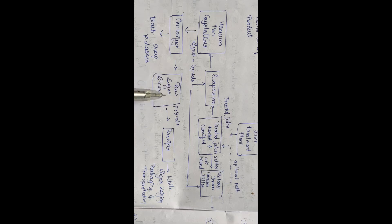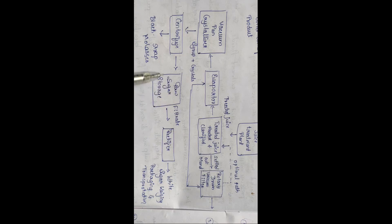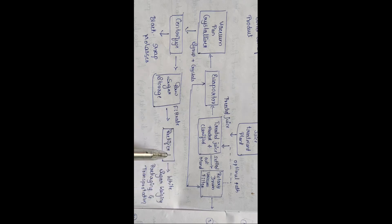The stored raw sugar is filtered using the rectifier. The sugar crystals are initially brownish in color; they are filtered in the rectifier and converted into white sugar crystals. After that, it is packed and other processes are carried out. This is the working process of the sugar mill.